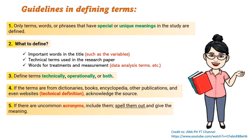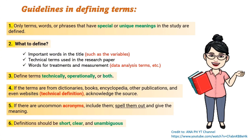Number five: if there are uncommon acronyms, include them — spell them out and give the meaning. Number six: definitions should be short, clear, and unambiguous.